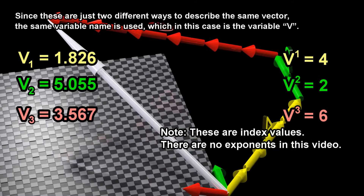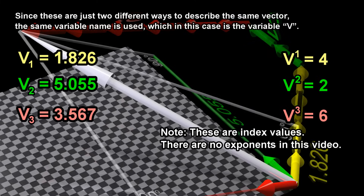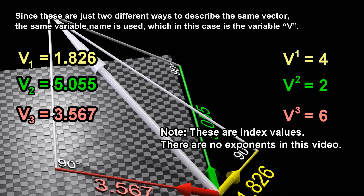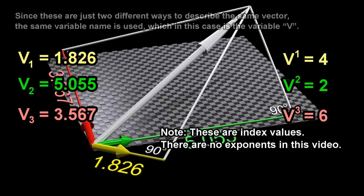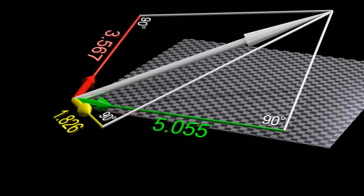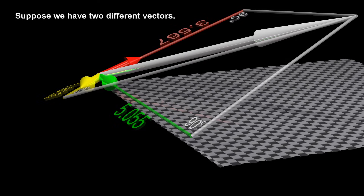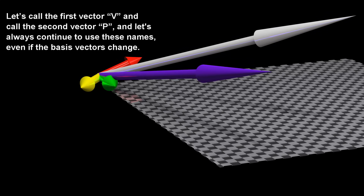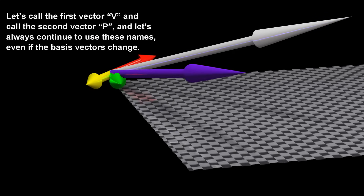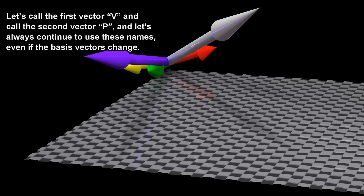Since these are just two different ways to describe the same vector, the same variable name is used, which in this case is the variable v. Suppose we have two different vectors. Let's call the first vector v and the second vector p, and let's always continue to use these names even if the basis vectors change.